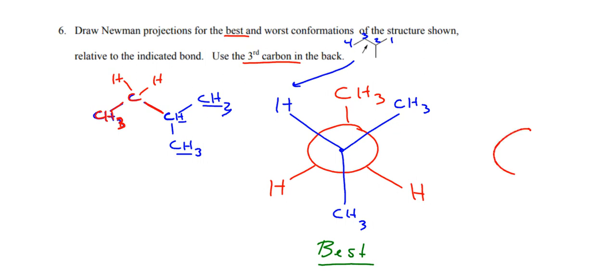But what's the worst? Well, the worst is going to be an eclipse. Now here's a hint: draw the back exactly the same way. But now I need to place my blue ones in front. Now which one is not the worst? The worst is not putting an H in front, because that doesn't create as much of a steric strain. If I put a CH3 in front, at least then that CH3 over that CH3 is kind of like a total eclipse. And then I can pick the other CH3. So this is the worst.